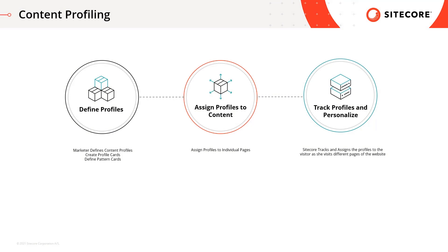Setting up content profiling in Sitecore XP is a three-step process. First of all you will define the content profiles you want to track when a visitor visits your website. This includes creation of content profiles, profile cards, and pattern cards.